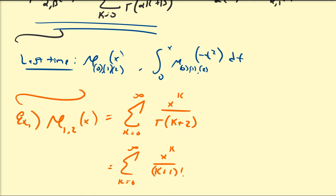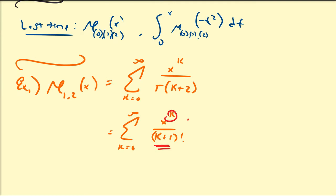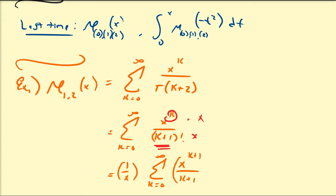To align the power of x with the factorial index, I'll multiply top and bottom by x — where x is independent of the summation variable. This gives 1/x times the sum from k=0 to infinity of x^(k+1) divided by (k+1) factorial.